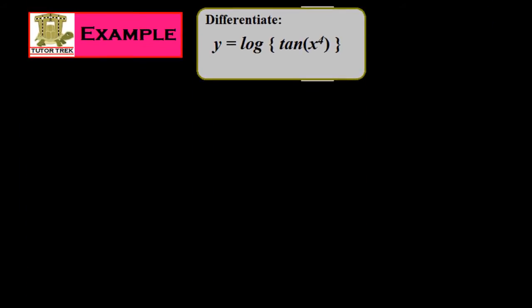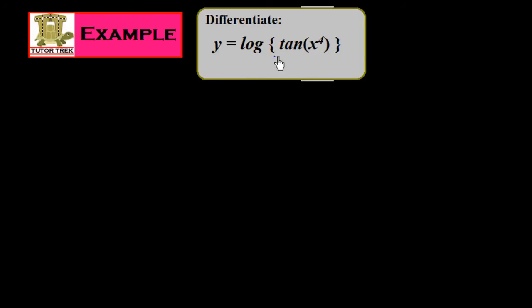Look at this question: differentiate y is equal to log tan of x to the power 4. Here you see there are three functions in this main function. The first function is log, the second function is tan, and the third function is the algebraic function x to the power 4. So three different kinds of functions are present: one is a logarithmic function, another is a trigonometric function, and the third is an algebraic function.